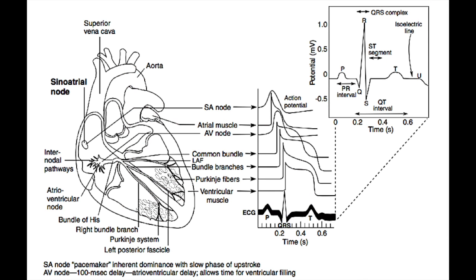In this slide, you can see a diagram of the heart and the conduction system, starting with the sinoatrial node, which is located in the right atrium. Following that, you have the internodal pathways and the atrioventricular node, then the bundle of His, then the common bundle, and the right and left bundle branches. Remember that the left bundle branch has an anterior and posterior fascicle. Following the bundle branches are the Purkinje fibers, which synapse onto ventricular muscle cells.